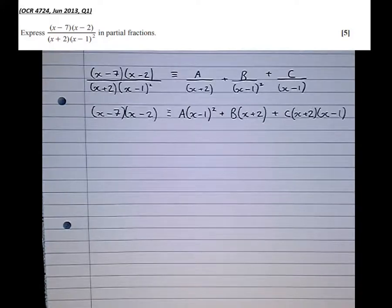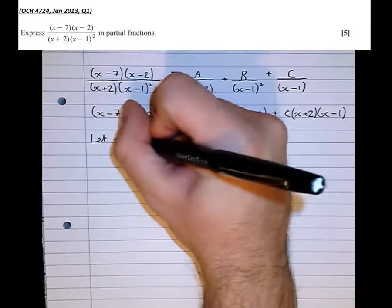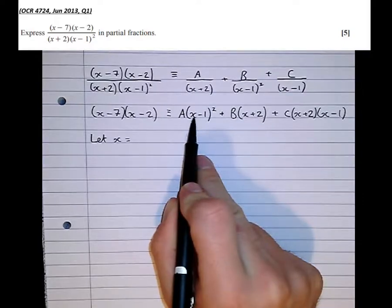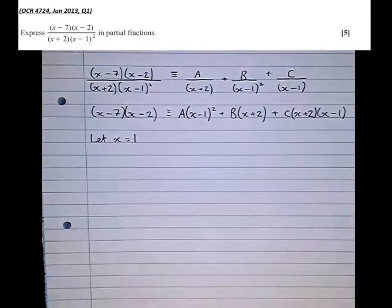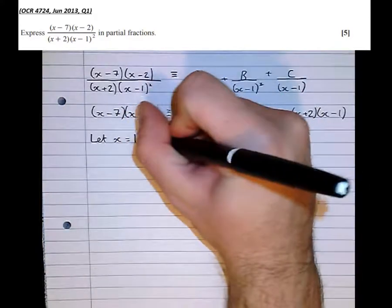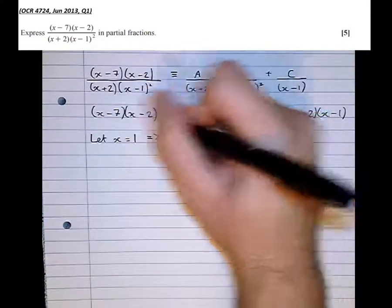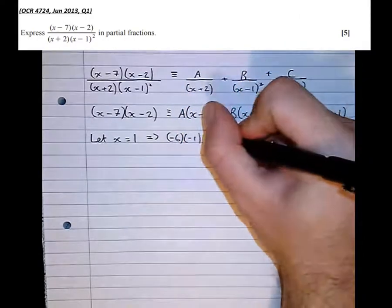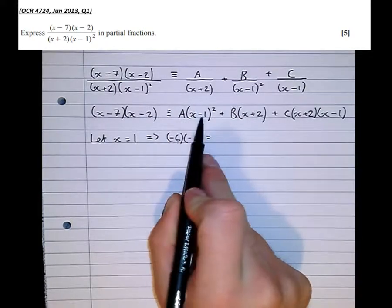So all's well so far. So the same as before, we're going to look for tactical values to sub in, so that terms disappear. So let x equal, well here I can see if I sub in 1, this bracket's going to disappear. So let x equal 1, which means that, so 1 minus 7 is minus 6, 1 minus 2 is minus 1.